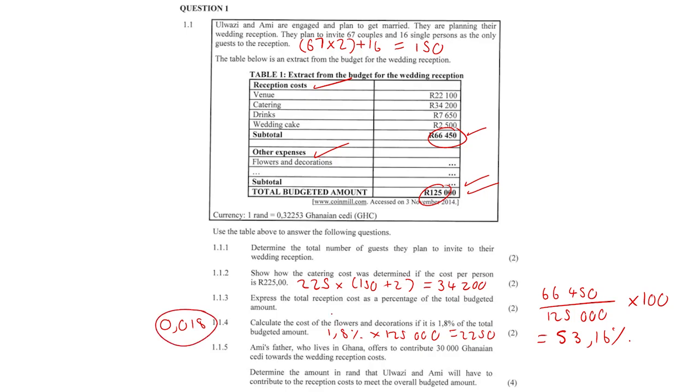Question 1.1.5: Amy's father who lives in Ghana (anyone know the capital of Ghana? It's Accra, land of Asamoah Gyan) offers to contribute 30,000 Ghanaian Cedi towards the reception costs. Determine the amount in rand that Wazi and Amy will have to contribute to the reception costs to meet the overall budgeted amount. Note 1 rand is equal to 0.3253 Ghanaian Cedi. Okay, we've got a very interesting calculation here. Listen carefully.